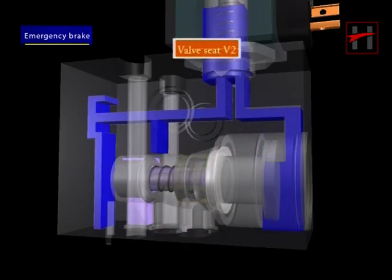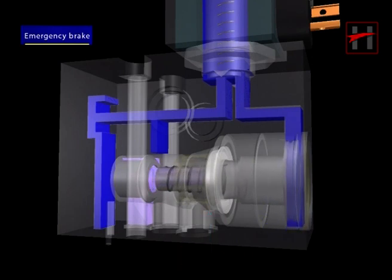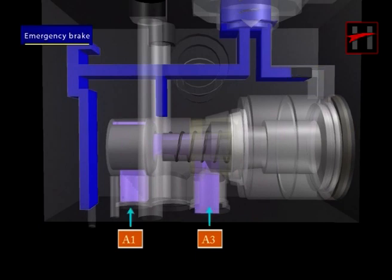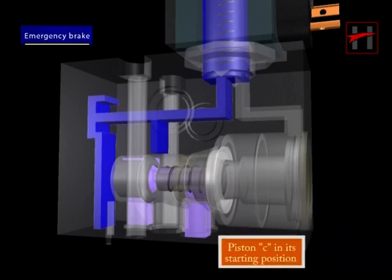valve seat V2 gets opened and the path from the port A1 to A3 gets opened. There is no control pressure on piston C which is in its starting position.